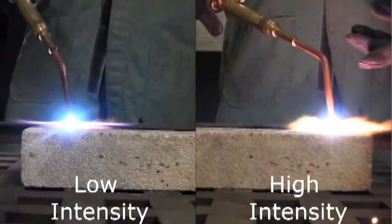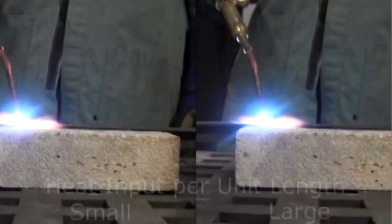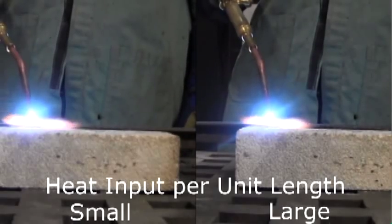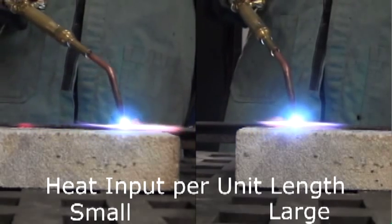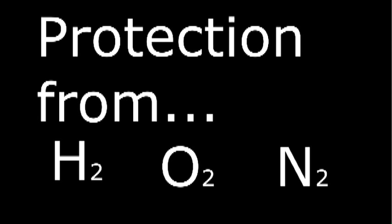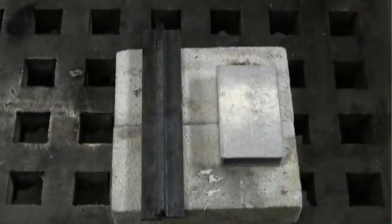If you're designing a weld, there are several important parameters you have to keep in mind. The intensity of the heat source, which is defined as the power input per unit area. The heat input per unit length of the weld, which is related to the heat source intensity and how quickly you move the heat source. The method of shielding the weld from reactive gases in the atmosphere, like hydrogen, oxygen, and nitrogen, that can affect the weld's strength. All of these variables are determined by the geometry of your weld and the type of materials you're trying to join.